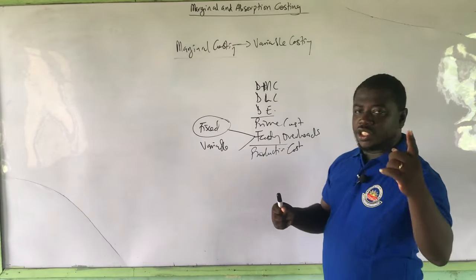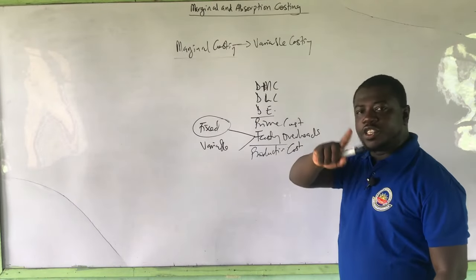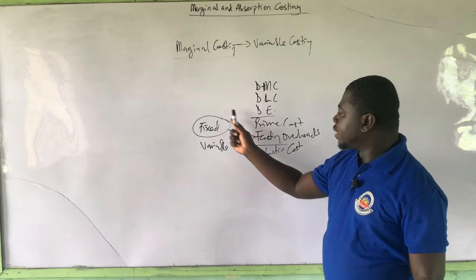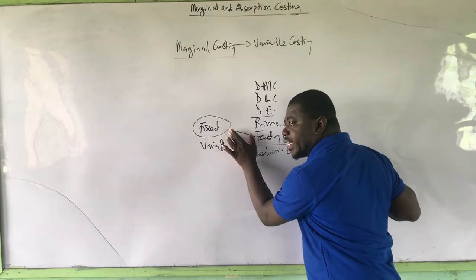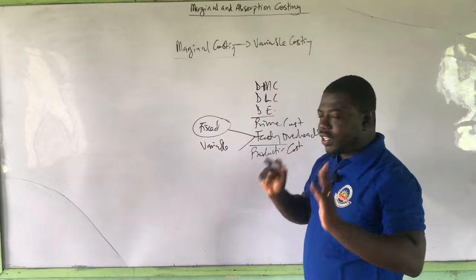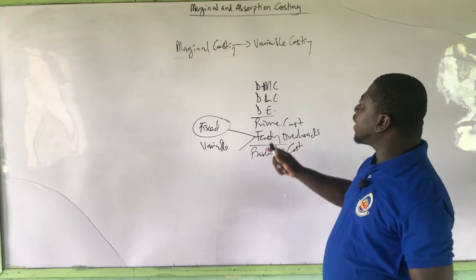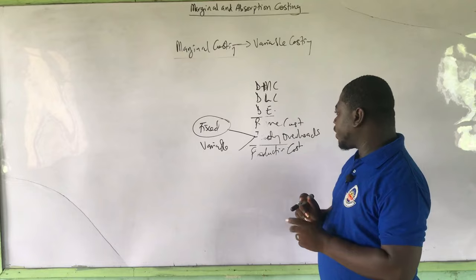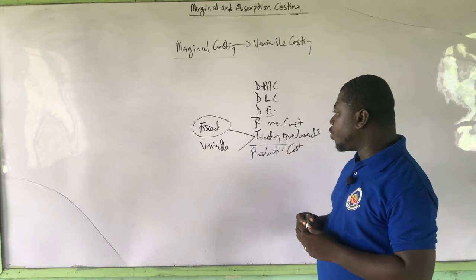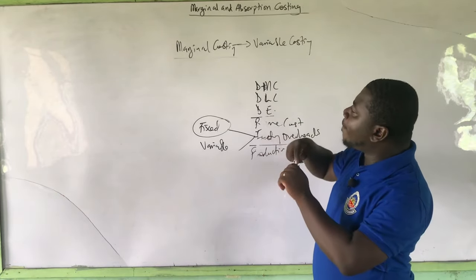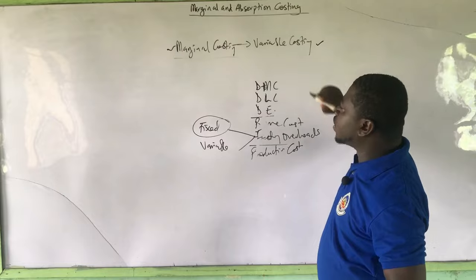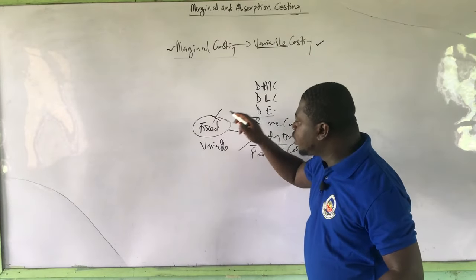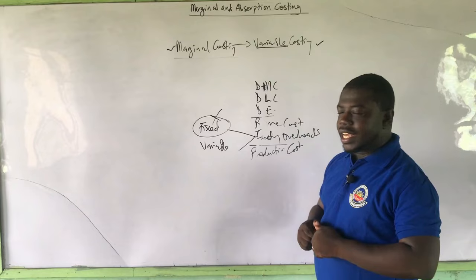When it comes to factory overheads, that is where we have a fixed cost component. The first time a fixed cost component sets in within the production cost is in the factory overheads — that is where we have fixed factory overheads, and then we can have variable factory overheads. The rule is that when you are calculating profits under the absorption costing, you are free to include both fixed and variable costs in your production cost calculation, which will eventually be used in the valuation of the closing stock. But under the marginal, or variable costing, we exclude the fixed production overheads in the valuation of closing stock.